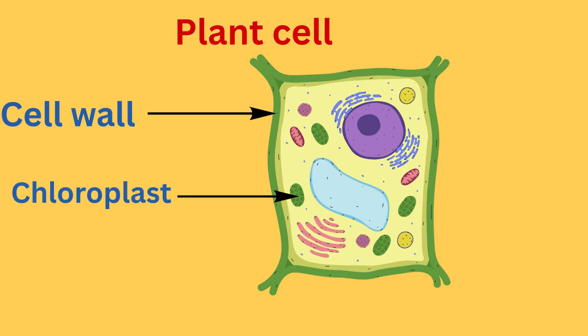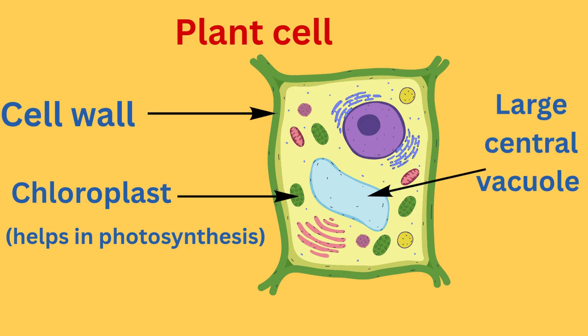Chloroplasts contain chlorophyll. It is a green pigment which helps to do photosynthesis. These large vacuoles store water and nutrients. They also help to maintain the cell's shape.